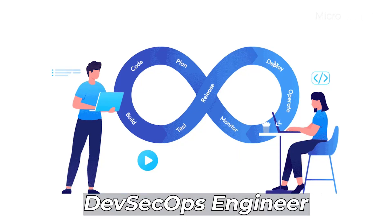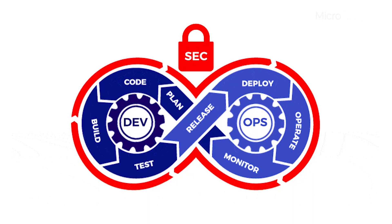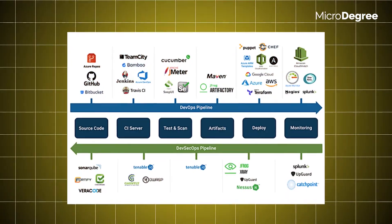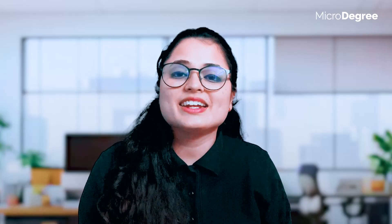And the last one is DevSecOps Engineer. DevOps engineers implement security so that our applications can be secure, and we address vulnerabilities. Skills required include security tools, DevOps integration, security management, vulnerability management, and risk management. These are the roles and responsibilities of a DevSecOps Engineer. Subscribe to our channel — in the next video, you will be able to explore more. Bye bye!